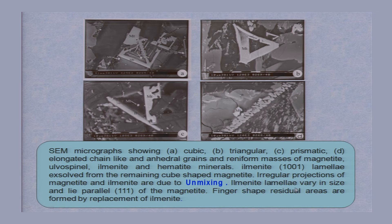Ilmenite lamellae vary in size and lie parallel to the {111} plane of the magnetite. Finger-shaped residual areas are formed by replacement of magnetite. These important textural features tell us a very interesting story about what has happened in the past — how the rock has been crystallized and how it has been formed. They can be easily ascertained by studying these textures.